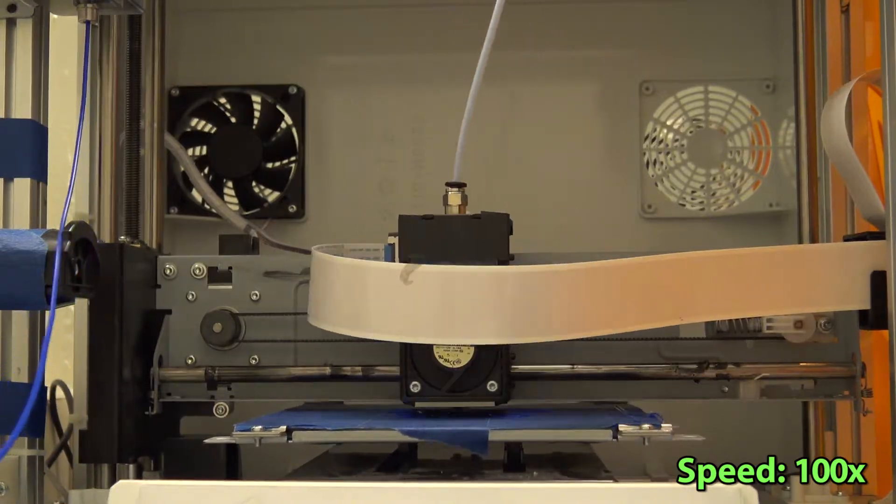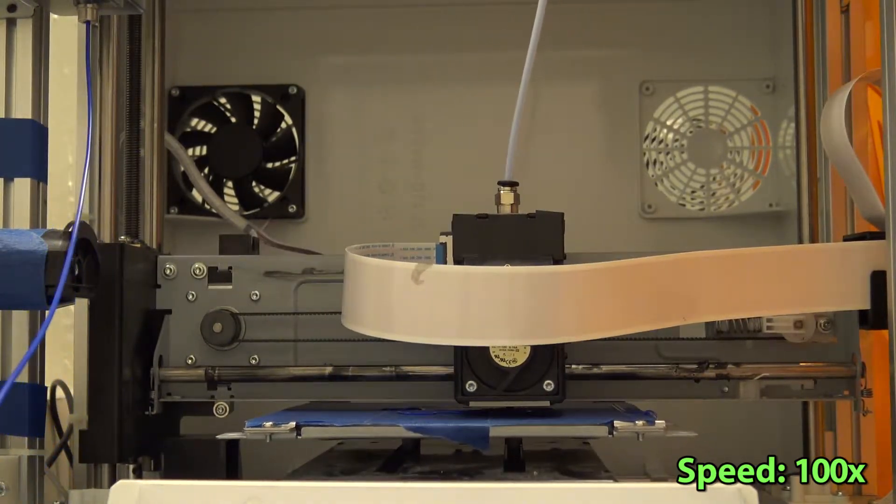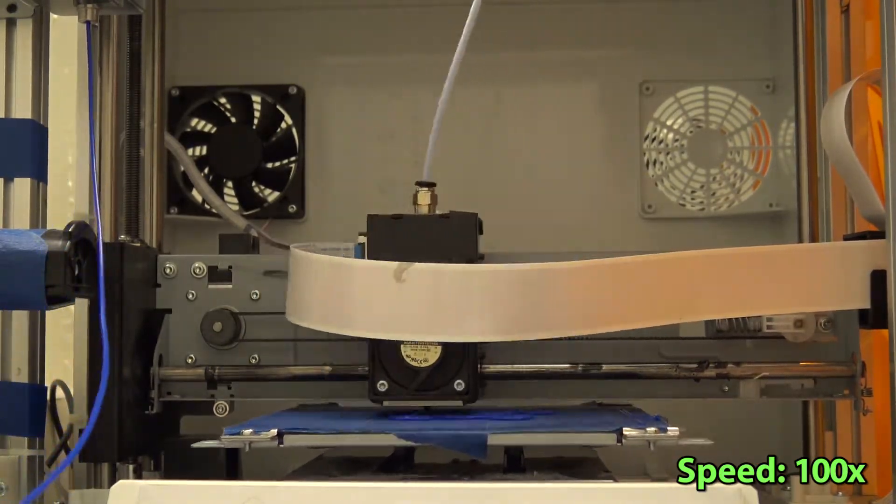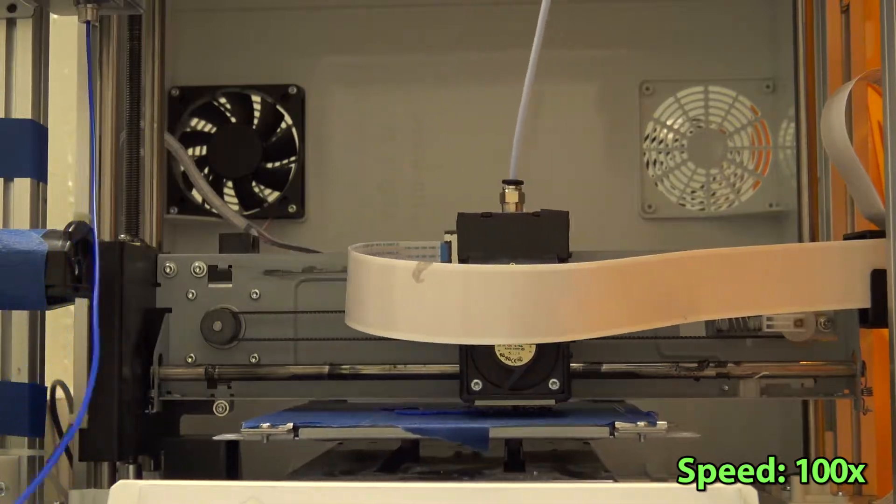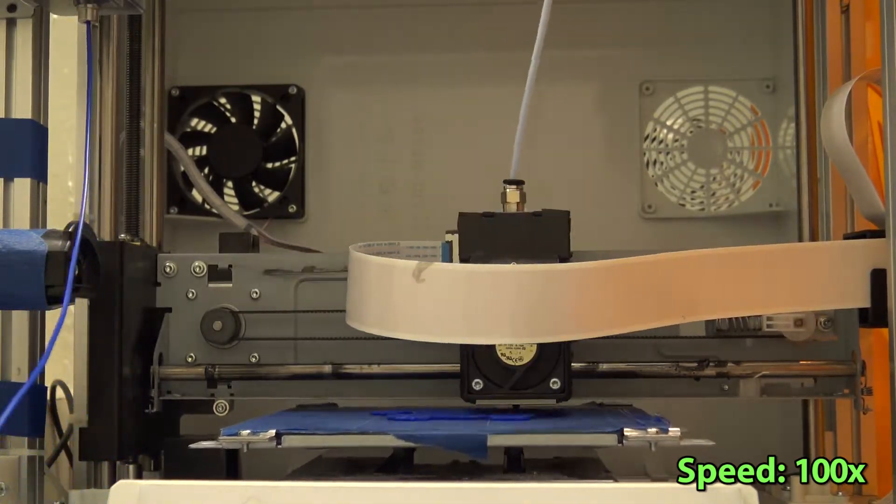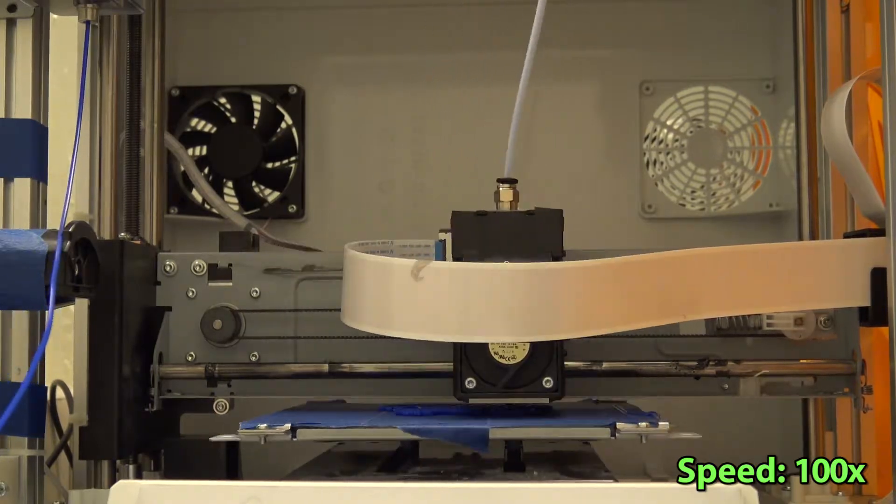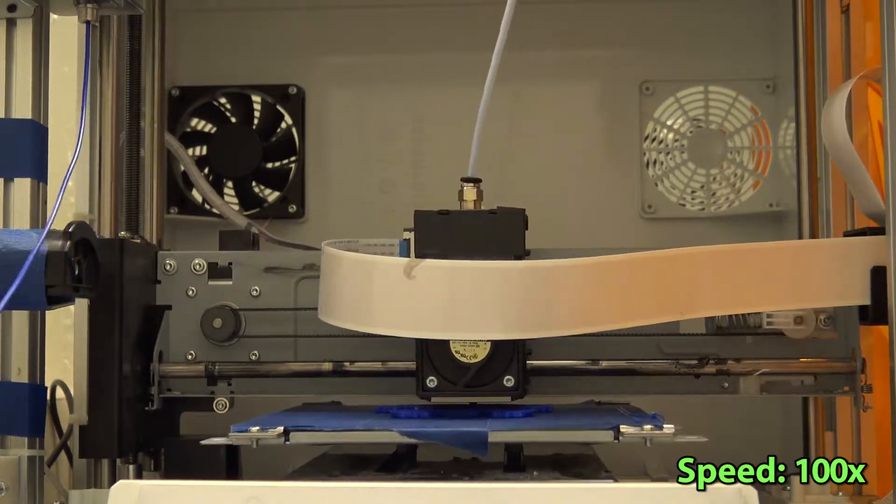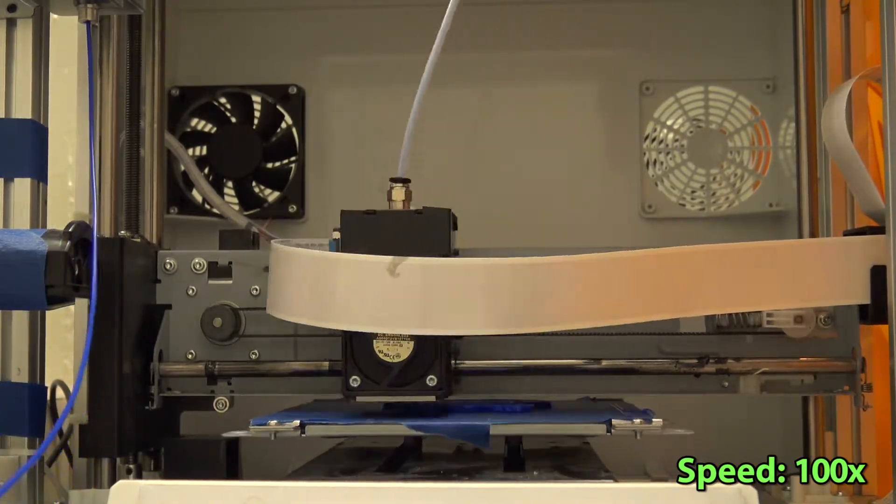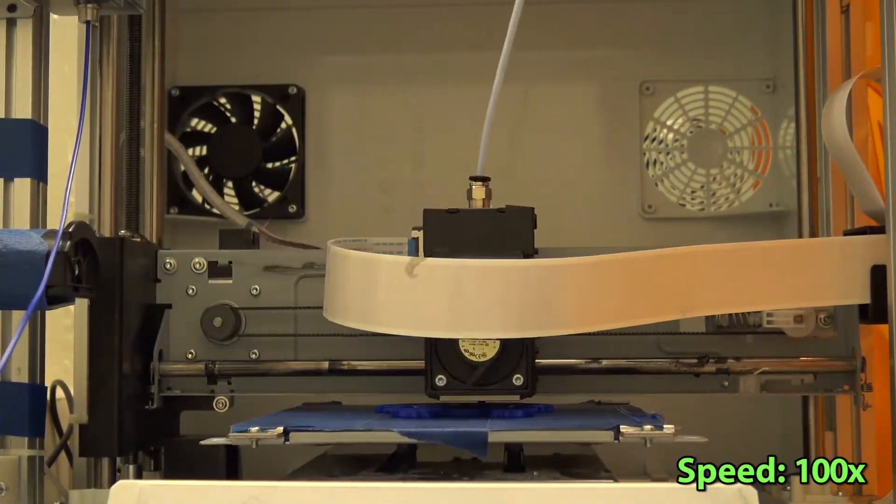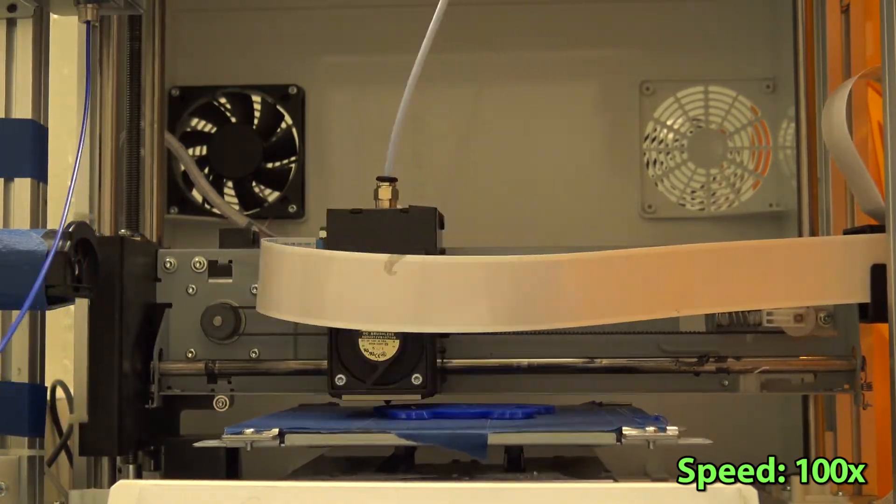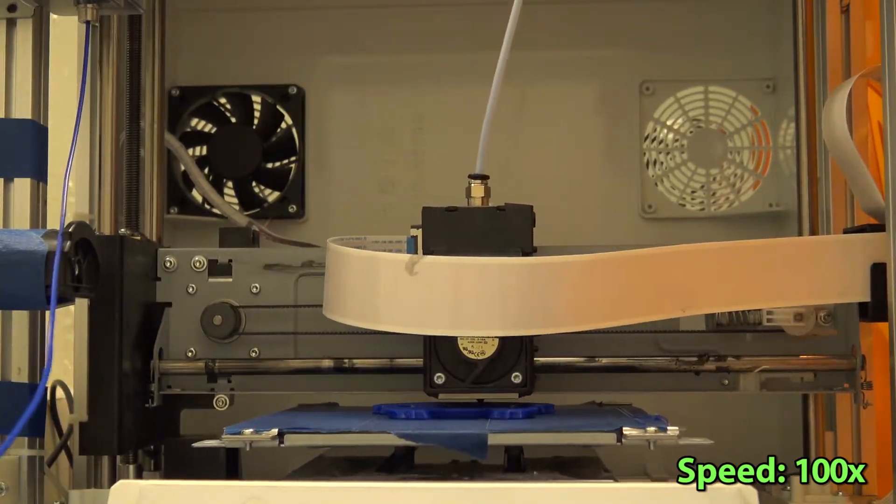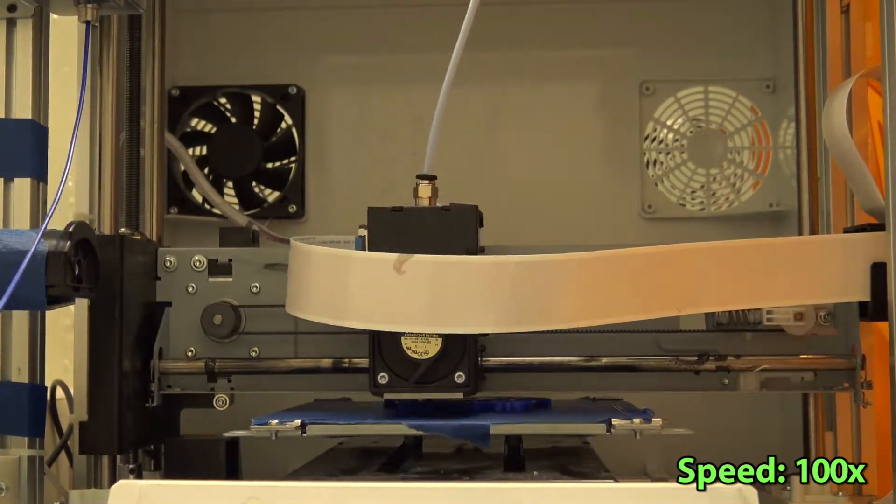I was talking about layer resolution which is the size of the layer of plastic deposited by the printer during the printing process. A resolution of 0.2 is acceptable for making a nice print and doing good finishing. The best resolution my 3D printer can do is 0.1 millimeters.